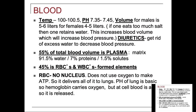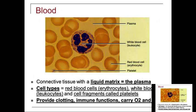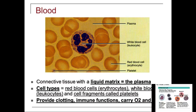Red blood cells do not have a nucleus because the function of a red blood cell is to carry hemoglobin, which binds to the gases oxygen and CO2. The liquid matrix is the plasma — that's the extracellular matrix. The cells are red blood cells, white blood cells, and platelets. RBCs are erythrocytes, WBCs are leukocytes, and platelets are thrombocytes. Blood's functions include clotting, immune functions from white blood cells, and carrying oxygen and CO2.